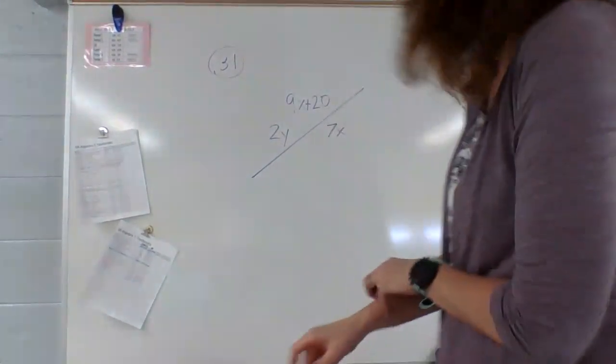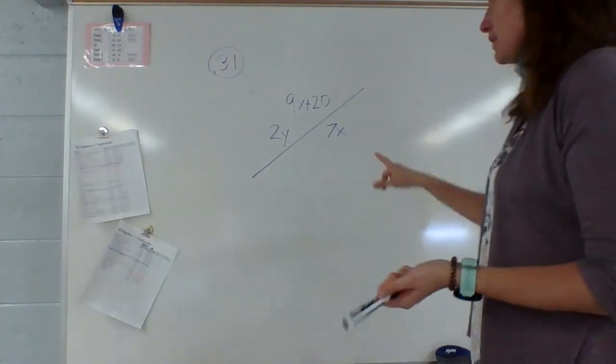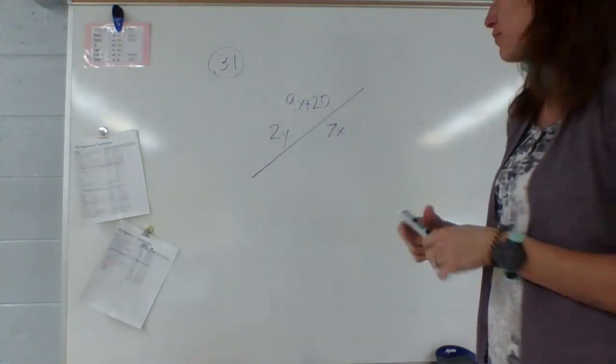Hey, Katie. So this is number 31. One of the things, they have x's and y's in this problem, so that's what you want to watch out for.